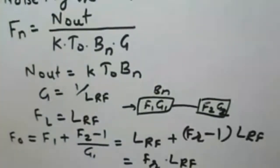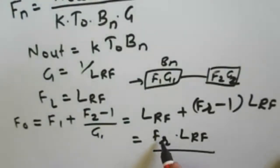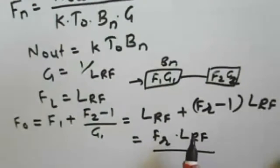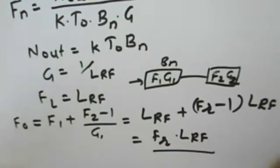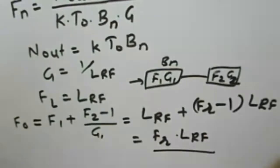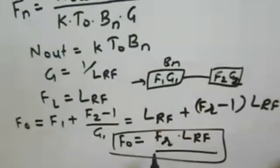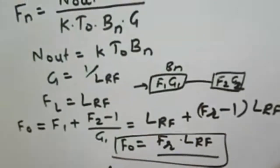The overall noise figure is therefore: F = L_RF + (F_R - 1)·L_RF, which simplifies to F = L_RF · F_R. This is the noise figure equation in the presence of RF losses. The overall noise figure depends upon the receiver noise figure F_R and the RF losses L_RF.